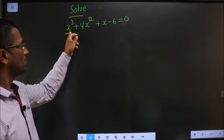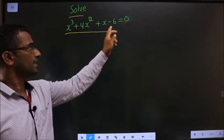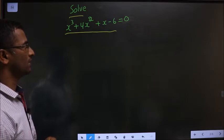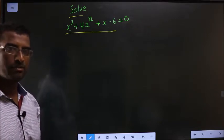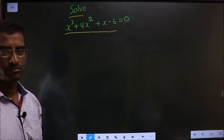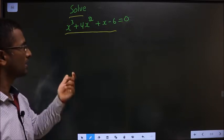Solve x cube plus 4x square plus x minus 6 equal to 0. Whenever you're told to solve, we need to find the values of x, and how do we find the values of x?